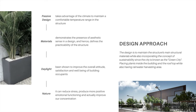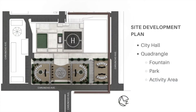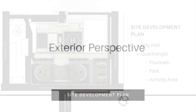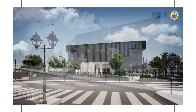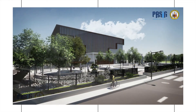The design for this project is to maintain the building's main structural materials while incorporating the concept of sustainability. Since Pasig City is known as the Green City, this involves placing plants inside the building and at the rooftop, having a rainwater harvesting area, and making use of curtain walls to achieve good daylighting. Here is the site development plan. The lot has a large open space that can be used for social activities and showcasing the building's facade. The idea is to embody a relationship with nature surrounding the site, reflecting the city's identity as the Green City, with a fountain and activity area.